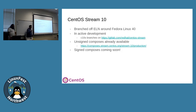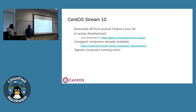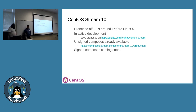CentOS Stream 10 is in active development now. It was branched from ELN around the time Fedora 40 released. You can find C10s branches already on GitLab, and you can see C10s builds on Koji. There are composites of 10 available that do boot now. The packages aren't signed yet, but signed composites are coming soon. The development for 10 is not officially open yet, but you can see it, file bugs, and send sample requests — with the understanding that things are still changing quite a bit. Many packages are still in the wrong place, may be removed, or may be added. The sands are still shifting.